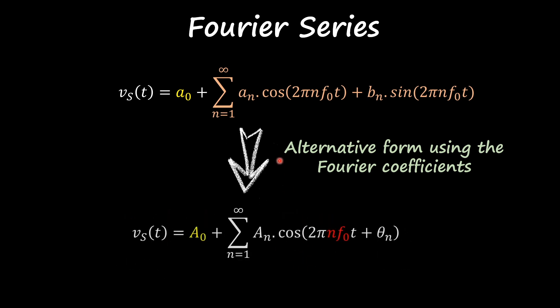If I pick up this A_n and theta of n and place them on that summation, I get A_n times cosine of 2πnf_0t plus that phase. This is the equation, this alternative form, we're going to use to analyze circuits.